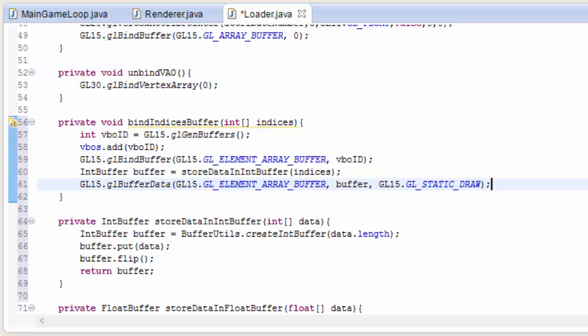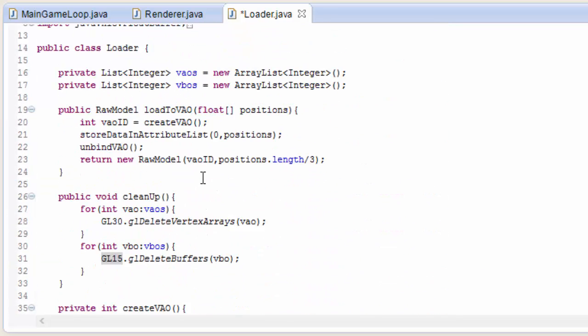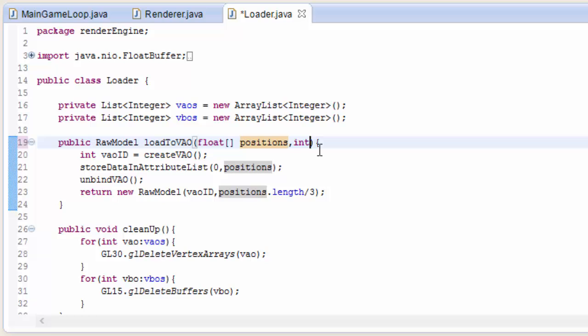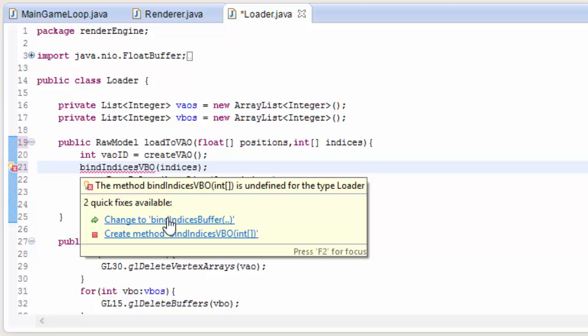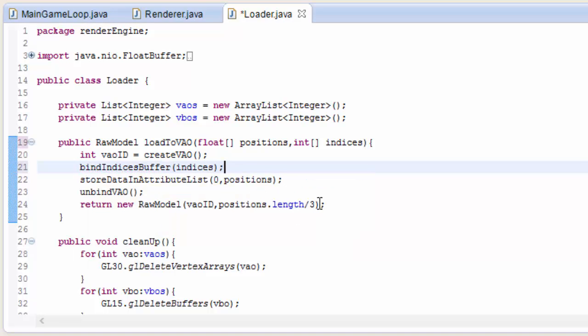So one final thing that we need to do, because that's all for that method, that will bind the indices VBO to the VAO that we've just created in this method here. So we need to take in the indices VBO, and just after we've created the VAO, we're going to bind the indices buffer to it by calling that method that we just created, bind indices buffer. And finally, the raw model needed to know the number of vertices, and that's now going to be the length of the indices buffer, which will still be six in the case of the quad.